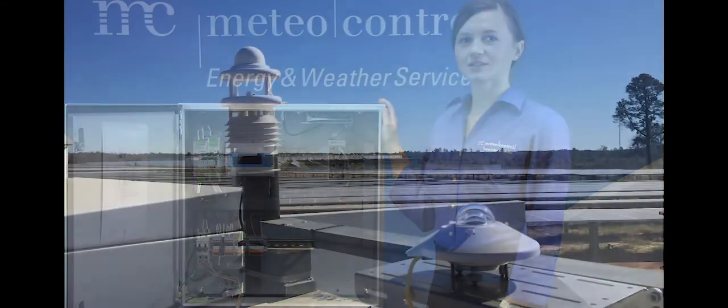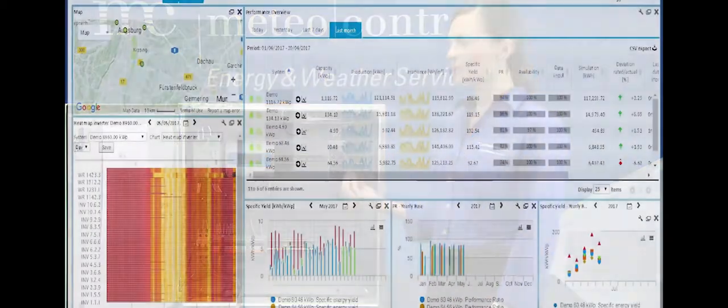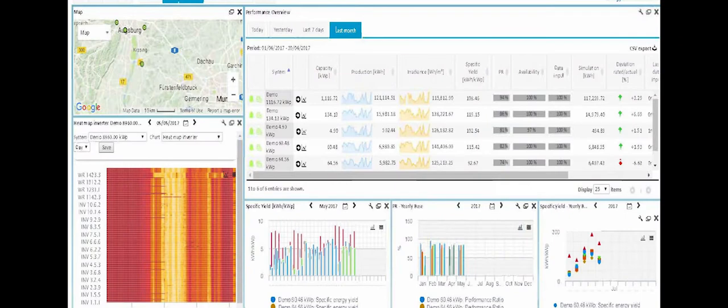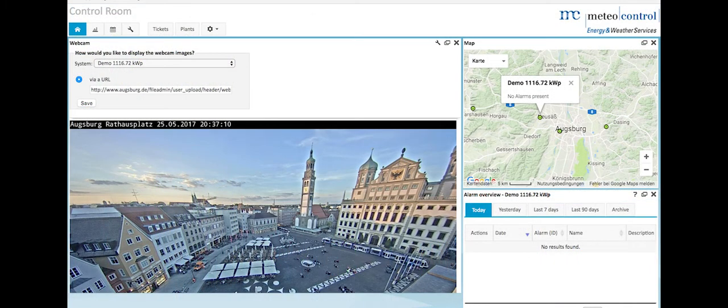To know what is happening on site, the monitoring data station gathers all the data from the field, from inverters, meters, weather sensors in a centralized point. It stores the data and sends it to the Meteo Control Portal over the internet, so you can monitor energy generation from your home or your office.